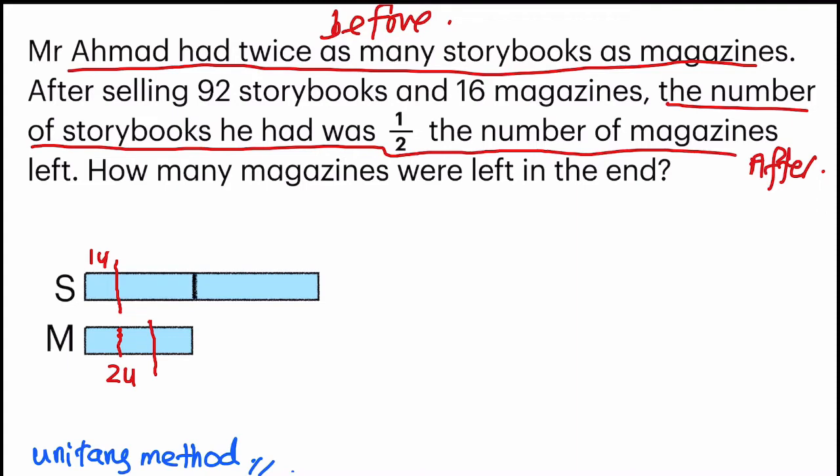So once you have done this, stop to check. The number of storybooks he had was half. So check if it's true. Since half of two is one, so my model is drawn correctly.